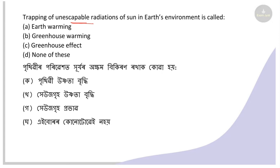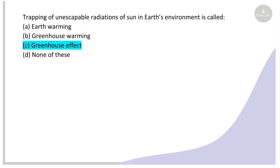Next: Trapping of solar radiation in the Earth's environment is called what? Options: earth warming, greenhouse warming, greenhouse effect, none of these. The right answer is greenhouse effect. When solar radiation that should escape is trapped in the Earth's environment, it is called the greenhouse effect.